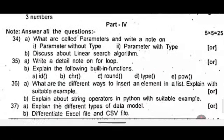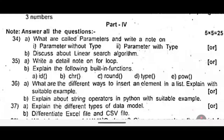Part 4: Five marks each, answer all questions — total twenty five marks. Choose either option A or B. Thirty four A: what are called parameters? Write a note on parameter without type and parameter with type. Or B: discuss about linear search algorithm.